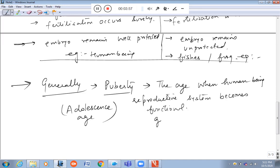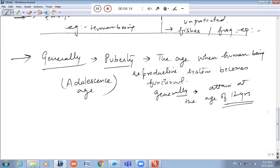Puberty is generally attained at the age of 12 years when the reproductive system becomes functional. There are some changes that occur.